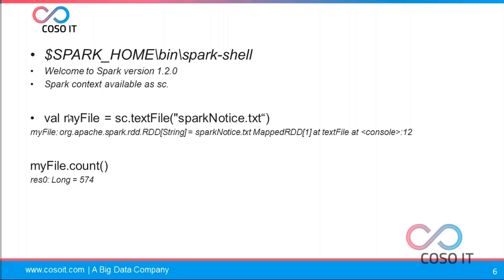Here I am loading my data into a variable called myFile using sc.textFile(), giving the path of that file — for example, spark-notice.txt. If it is in HDFS, you have to give a URI like hdfs://followed by the full path of your file. This is an example program. It will show you the output: myFile is of type org.apache.spark.rdd in string format — it is an array of strings.